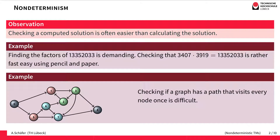Or consider this graph here. To check whether there is a path through the graph that visits every node exactly once might be difficult. However, once you see the path it's quite easy to check that this is really a path visiting every node.